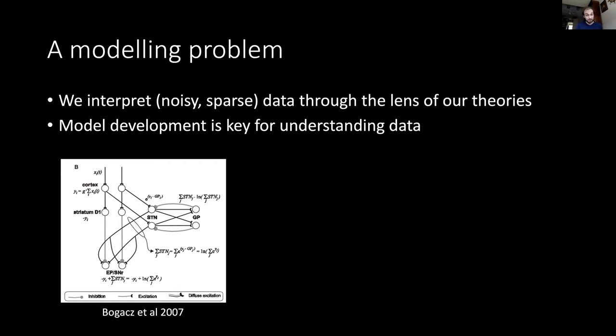On the left you see one example, which is a cortical basal ganglia network by Rafael Bogacz and colleagues in 2007. This is a model of action selection. Very briefly, the idea was that different actions are represented in terms of their saliencies in cortex, and these saliencies are fed forward to the basal ganglia output nodes which disinhibits responses.